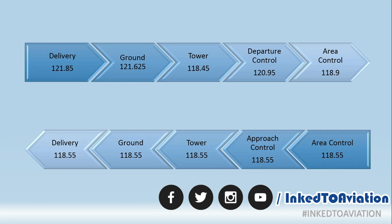On the other hand, at bigger airports like Dubai or US airports — for example Los Angeles — there might be even further segregations: a Ground A, Ground B, a north tower, a south tower. The basic five levels remain the same, but depending on the aerodrome infrastructure, air traffic, and air regulations, they can be further subdivided.